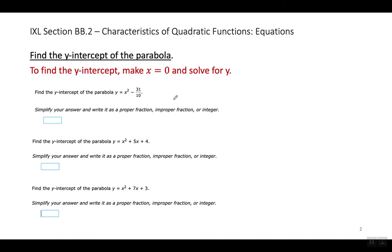Look at our first example. Look how easily you could do this. If X equals 0, then the Y-intercept is just this number right here. You don't have to do anything. There's your answer. The answer is right here.